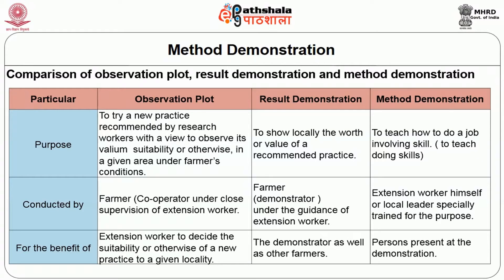In terms of who conducts each: an observation plot is conducted by a farmer cooperator under close supervision of the extension worker. Under result demonstration, the farmer is the demonstrator under the guidance of the extension worker. Under method demonstration, the extension worker himself or a local leader conducts it. The benefits: under observation plot the extension worker decides suitability of a new practice for a given locality; under result demonstration, the demonstrating farmer as well as other farmers benefit; and under method demonstration, persons present at the demonstration benefit.